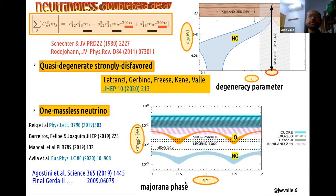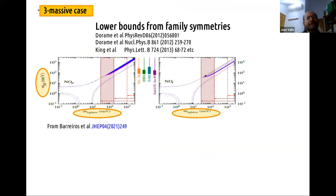I should also say that the one massless neutrino hypothesis is not ad hoc — it emerges in a variety of theories of neutrino mass. So now to the three massive case: in that situation, of course, there is no guaranteed lower bound if you have normal ordering. However, in theories that incorporate family symmetries to make sense of the oscillation results, more often than not, what you find is that there are lower bounds for M-beta-beta even for normal ordering.